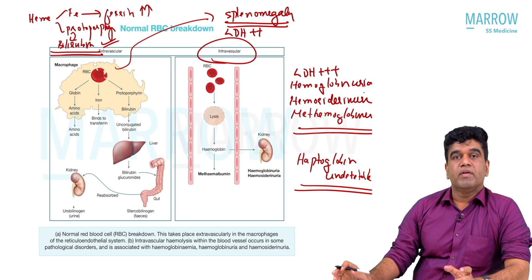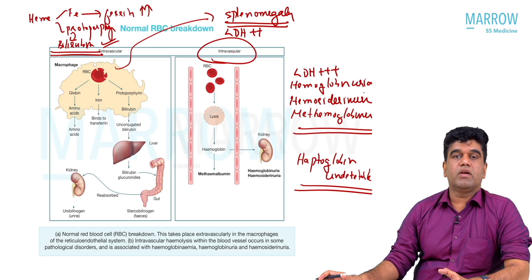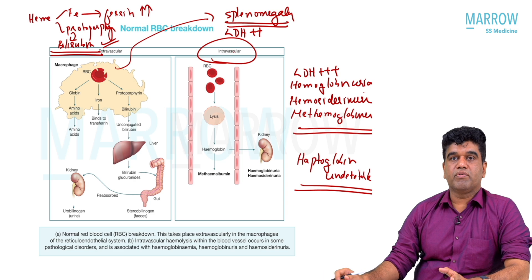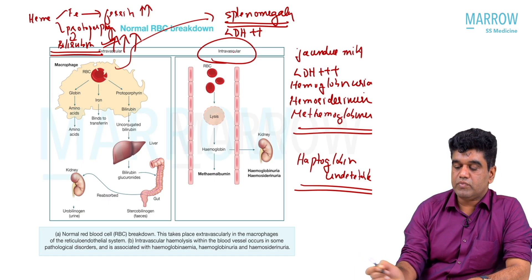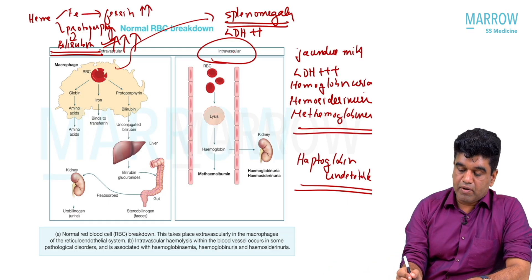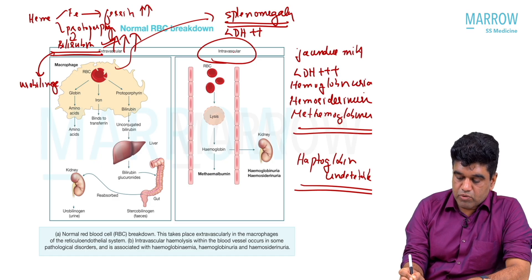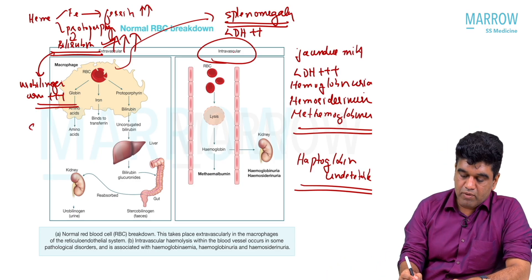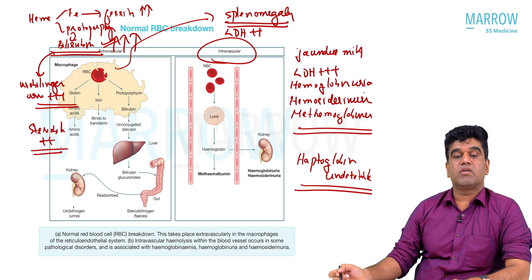In intravascular hemolysis also, when large amounts of RBCs are destroyed, large amounts of heme come to circulation, break down into iron and protoporphyrin, and you get some bilirubin — so jaundice is present but mild, whereas in extravascular it is very significant. From bilirubin you will have urobilinogen in urine and stercobilinogen in feces — urobilinogen in urine will be 3+ in extravascular hemolysis.